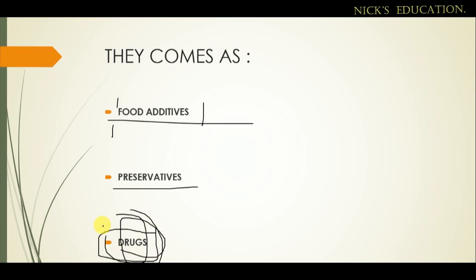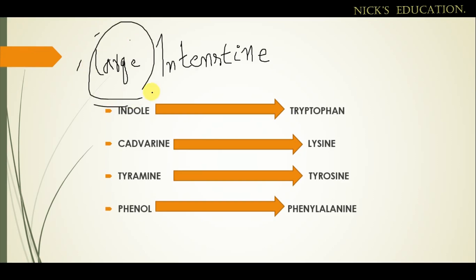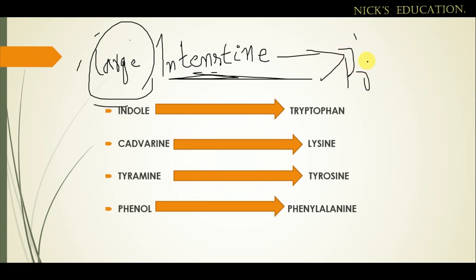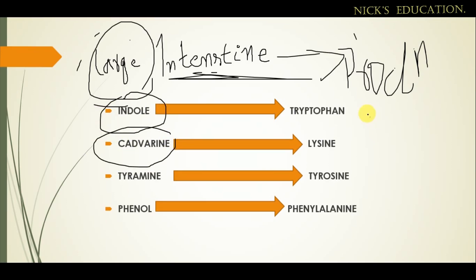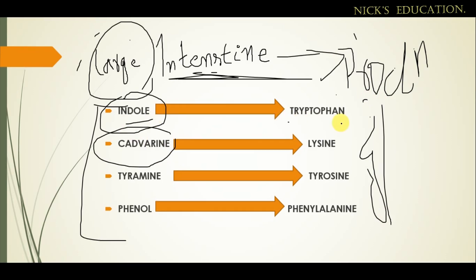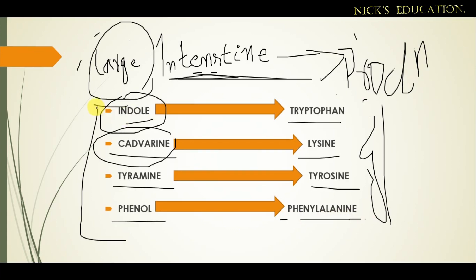Over a large intestinal time, there will be production of certain chemicals. From tryptophan, indole will be formed; from lysine, cadaverine will be formed; from tyrosine, tyramine will be formed; from phenylalanine, phenol will be formed. These are some of the less toxic or unwanted chemical compounds formed.